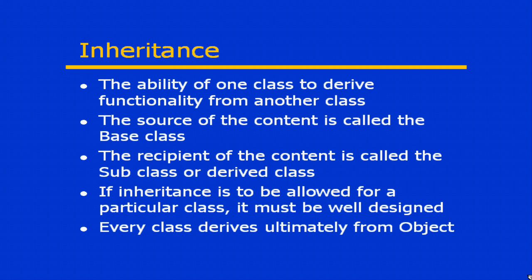Put very simply, inheritance is merely the ability of one class to derive functionality from another class. If I've got a class that provides and defines some basic functionality that I want to use elsewhere, I can derive another class from it and all of the structure and content of that class will be inherited by that subclass. The source of the content is referred to as the base class. The recipient of that content is called the subclass or derived class. For the base class, you'll sometimes hear the term super class or parent class. For the subclass, you'll hear terms such as child class as well as derived class.